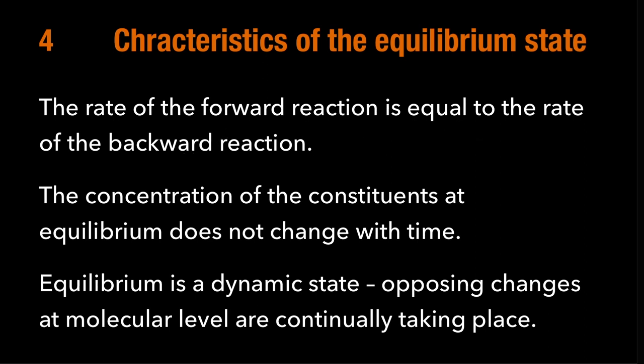The second property is that the concentration of the constituents — that is the reactants and products — they all exist in a closed system and will not change. It's a dynamic state, meaning at the molecular level, opposing changes — forward and backward reactions — are continuously taking place. Even though the amount doesn't change, the reaction is still happening at the molecular level.